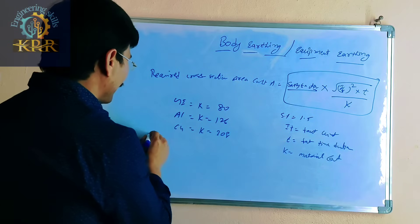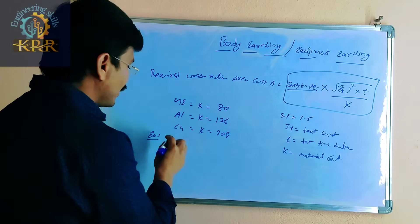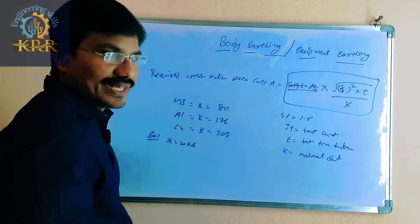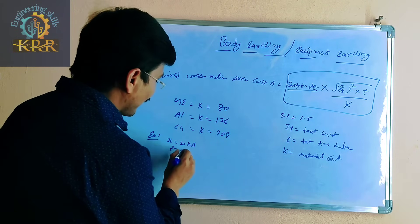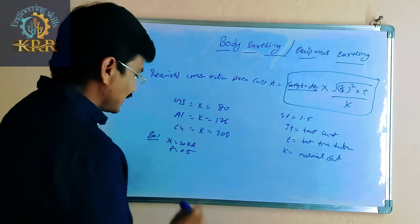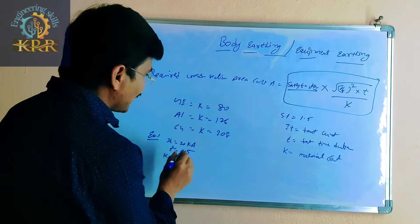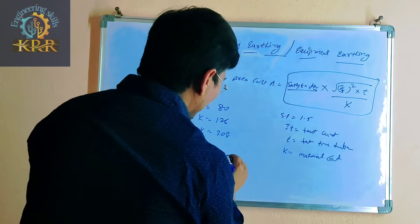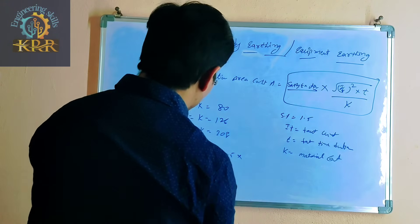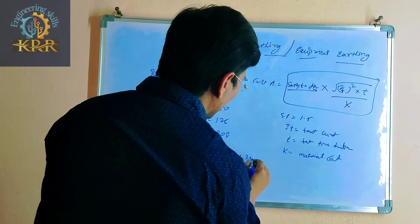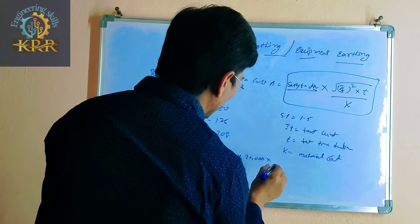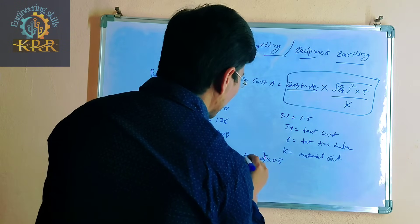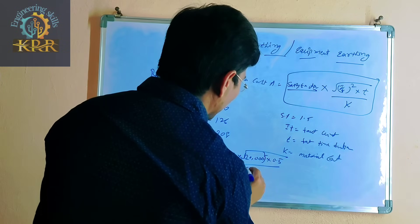For the example: fault current is 20 kA, fault duration is 0.5 seconds, and we are using a GI strip with material constant K equal to 80. The calculation is: A = 0.5 × √(20,000² × 0.5) / 80.